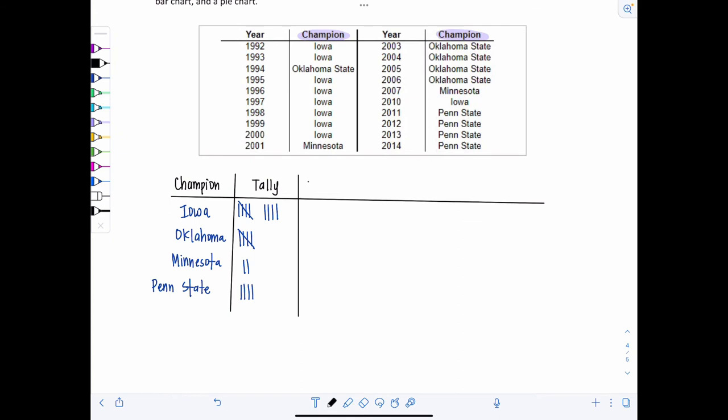Now let's list the frequencies for each. So just total it up. See how many tallies you have. Iowa, nine times. Oklahoma, five. Minnesota, twice. And then Penn State, four times. So this is a frequency distribution.